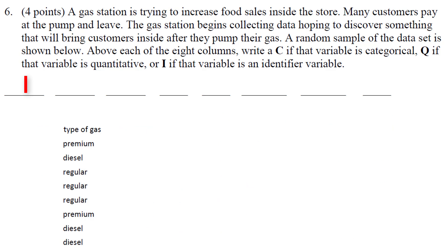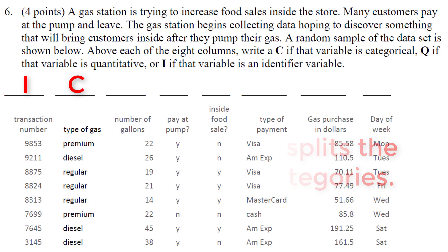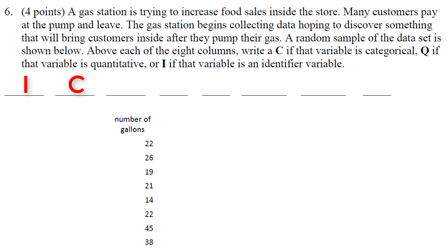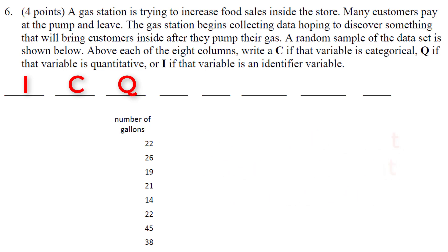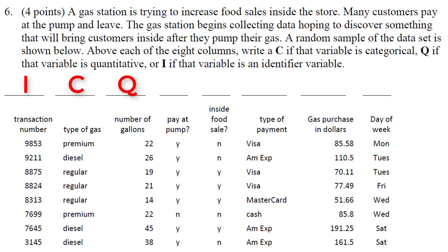Next we have type of gas, and that would be categorical because it's just the category of gases bought. Next we have number of gallons, and that's an actual real number because we could say the person who got 19 gallons got two gallons less than the person who got 21. We can't do that with transaction number — the difference between transaction numbers doesn't mean anything. That's how you know the difference: if talking about the difference in quantitative values makes sense, it's truly quantitative.